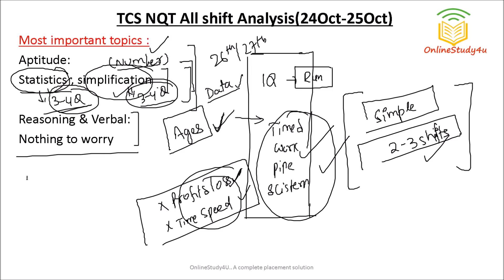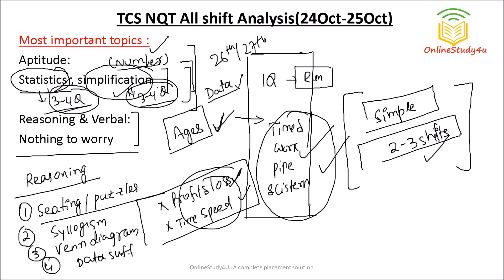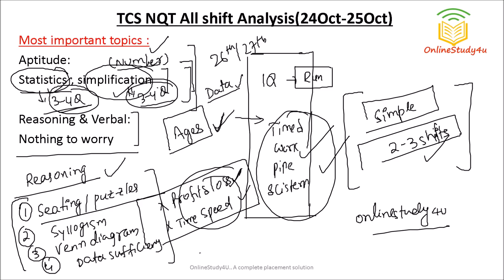For reasoning, nothing to worry about — questions are very easy. Seating arrangement and puzzle questions are the most common, and we have already solved those. Syllogism has one question coming, and if you know syllogism you know venn diagram too. Data sufficiency questions are well below TCS examination level — do not worry at all. Blood relations are also there. These five topics — seating arrangement, puzzles, syllogism, venn diagram, and blood relations — deserve some effort for tomorrow's examination.